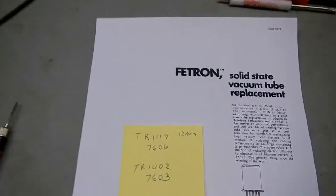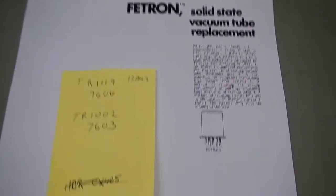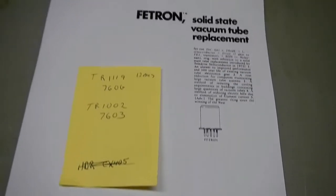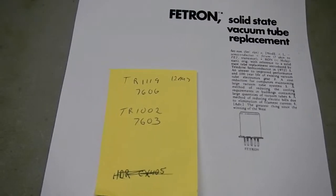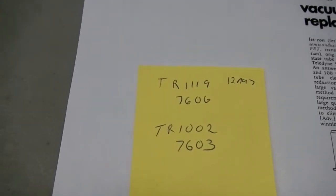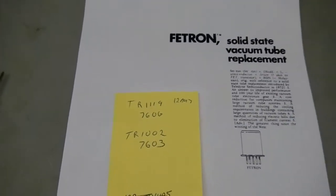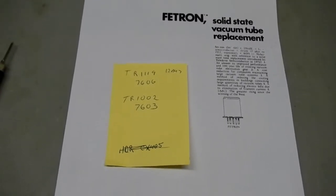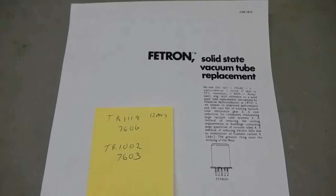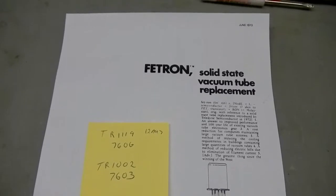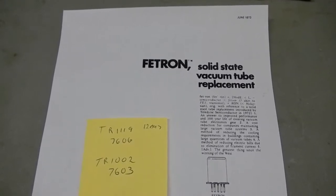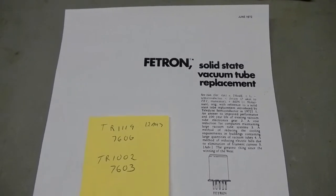Turns out they are something called a Fetron. This was a device made by Teledyne Semiconductor back in the 70s. And here's the numbers on them—I had to Google them and pulled this up. So apparently that was something that was made as a solid-state replacement for vacuum tubes in the 70s, back when rather than redesigning the circuits they just pop these things in.